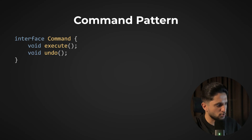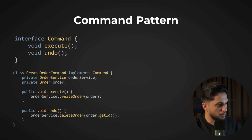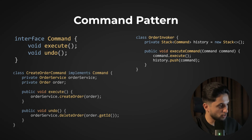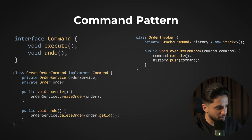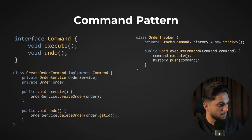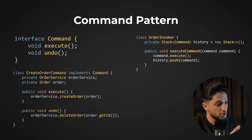You create a Command interface with two methods: execute and undo. For example, CreateOrderCommand implements execute as orderService.createOrder and defines undo as orderService.deleteOrder. An OrderInvoker class has a private history field (a stack that enables undo/redo). Inside executeCommand, it takes any Command instance and calls its execute method. Each command encapsulates both the action and the knowledge of how to undo it.